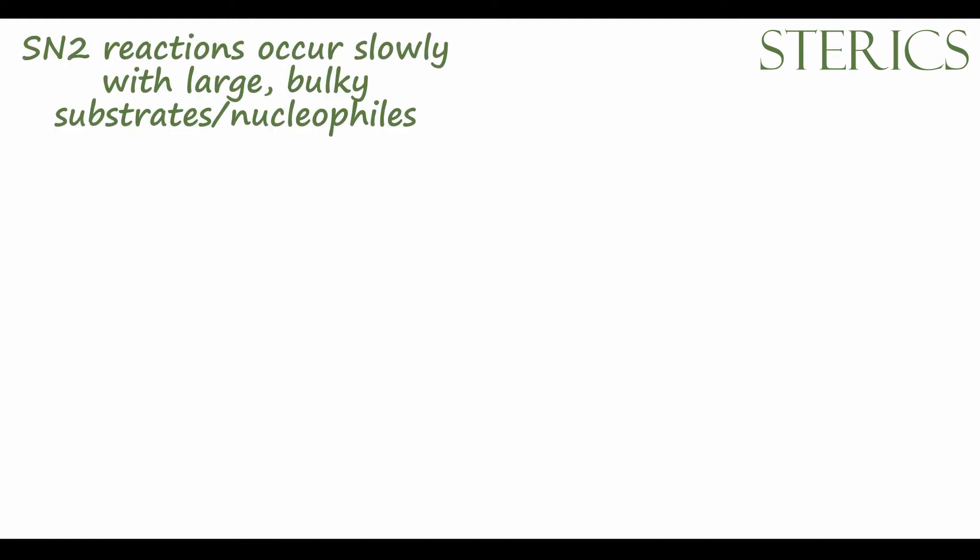The most important thing to know is that SN2 reactions are very slow with very bulky, very large substrates or nucleophiles. So a haloalkane like propyl bromide is a primary haloalkane and it is not very sterically hindered, so it would undergo SN2 reactions quite quickly.